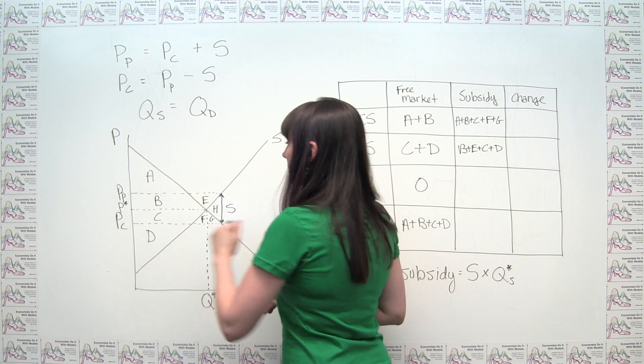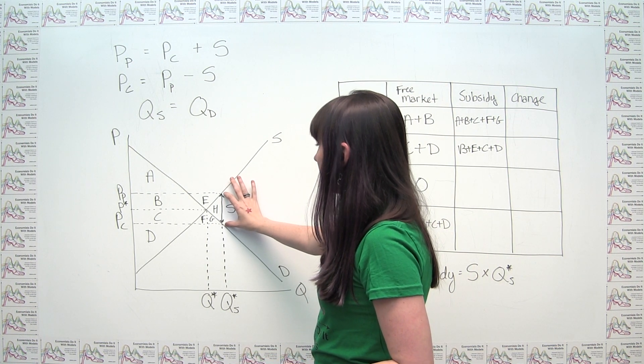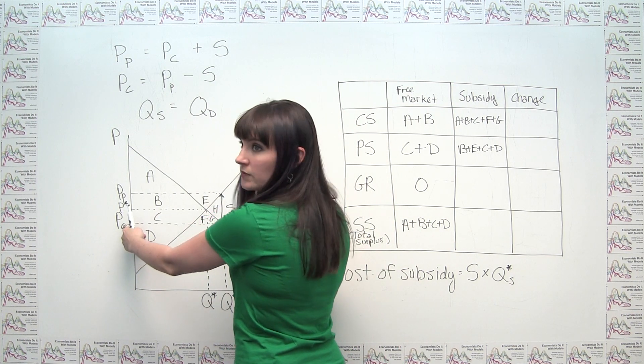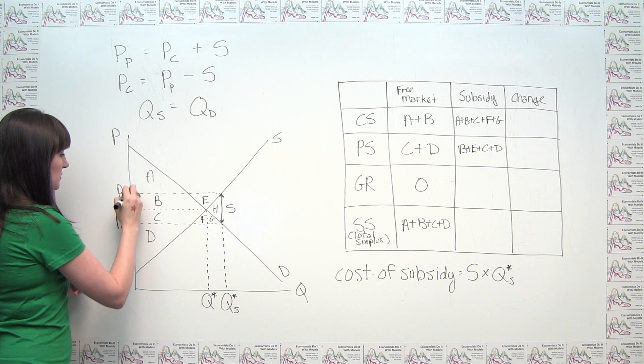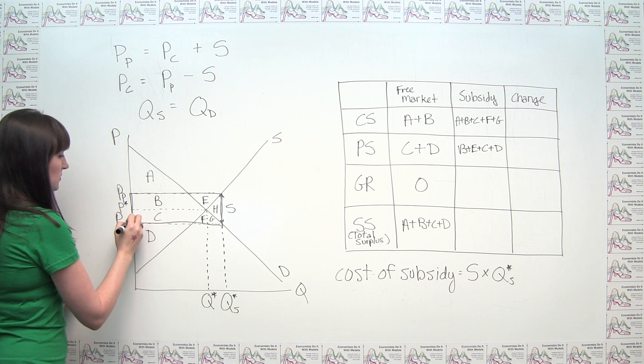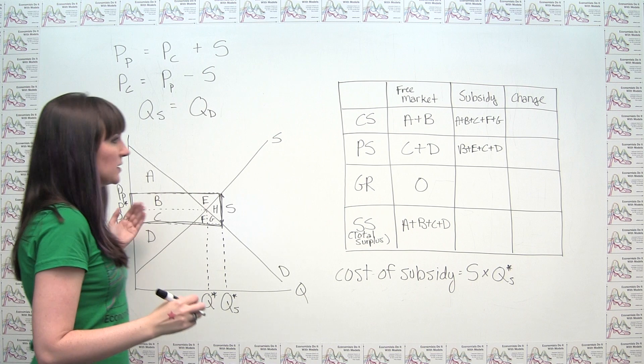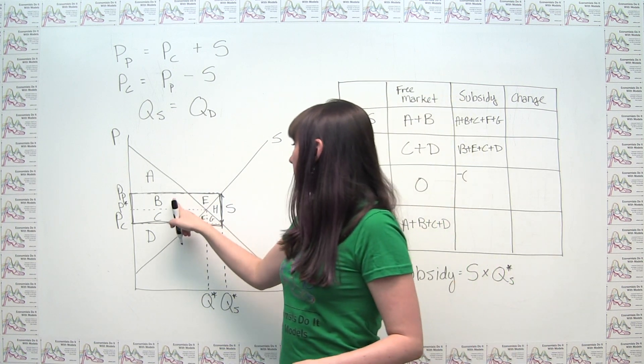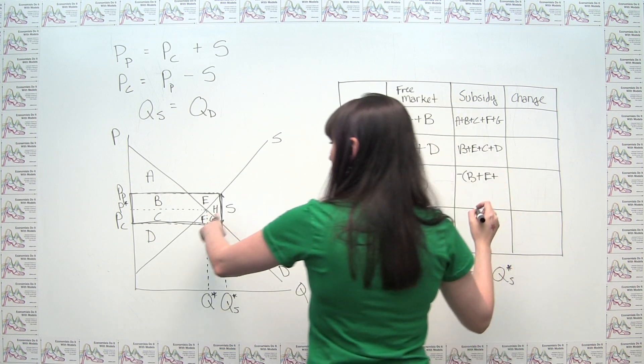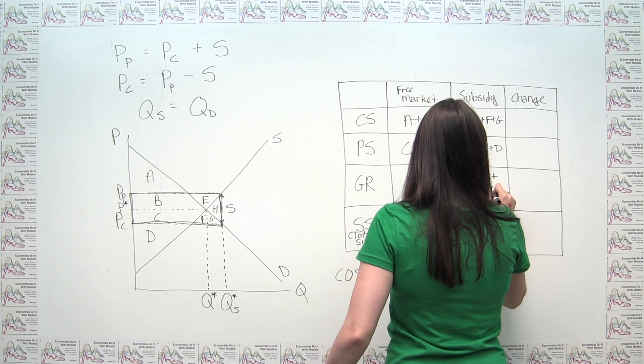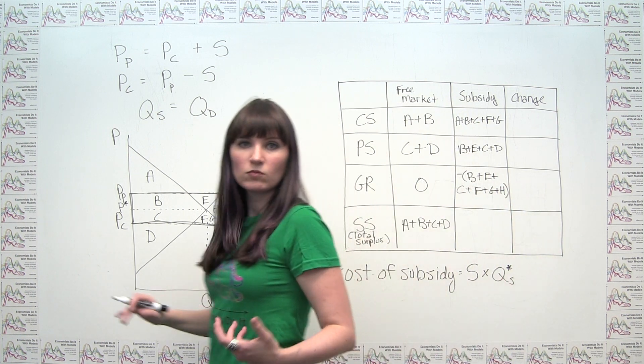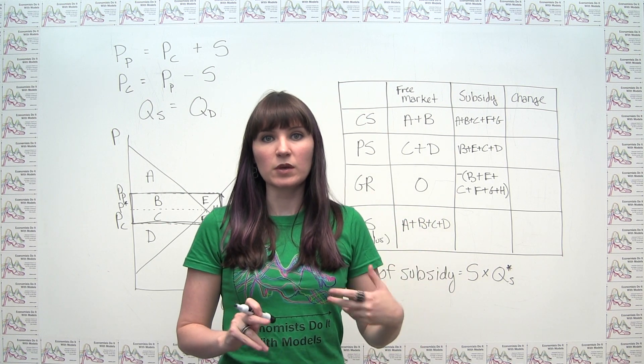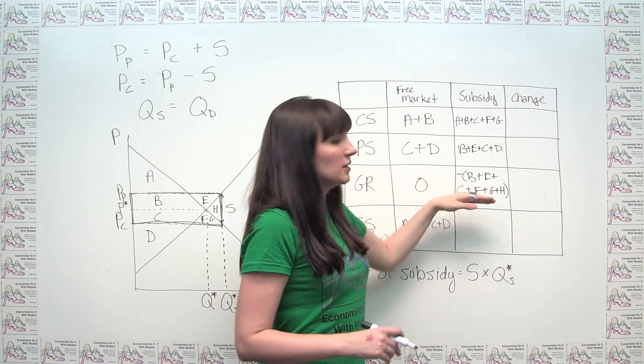And luckily we can find that. We can look here and we can notice, oh look, we have the per unit amount of our subsidy being this vertical distance here, and we have the quantity transacted with the subsidy being this horizontal distance here. So we can see that the cost of the subsidy to the government is this whole rectangle here. And represented in our lettering scheme, this is going to be negative because costs are negative revenues: B plus E plus C plus F plus G plus H. Really not more complicated than that. The reasoning is pretty much the same as we had with a tax. We just have to remember that because a subsidy is a negative tax, we also end up with a negative in terms of government revenue.